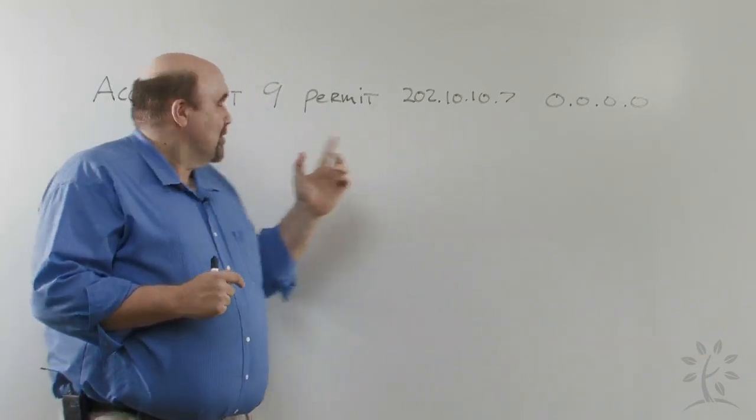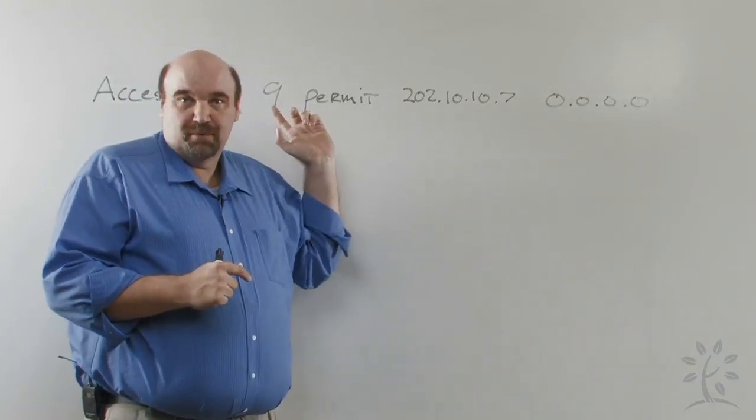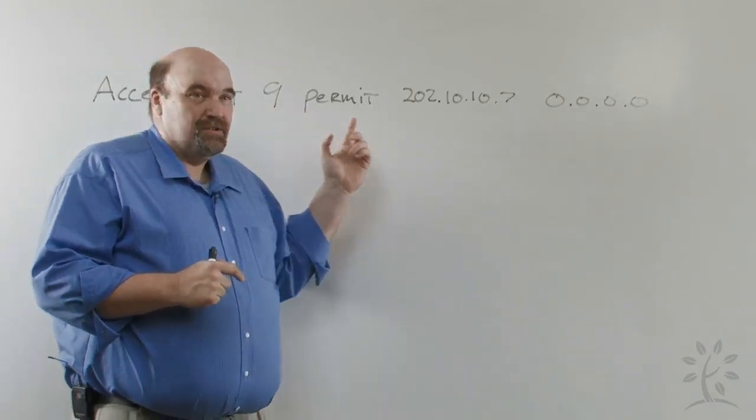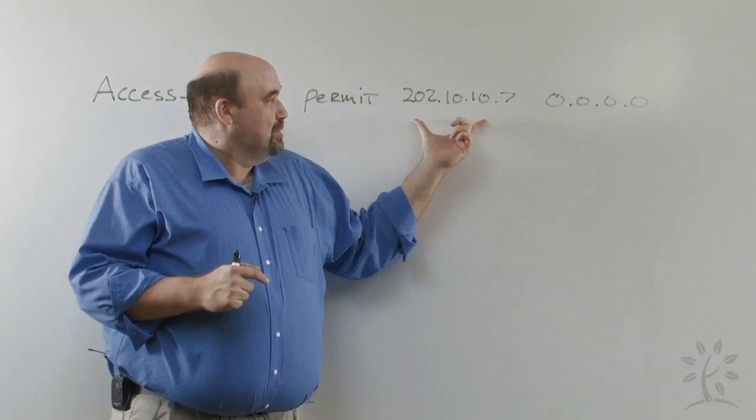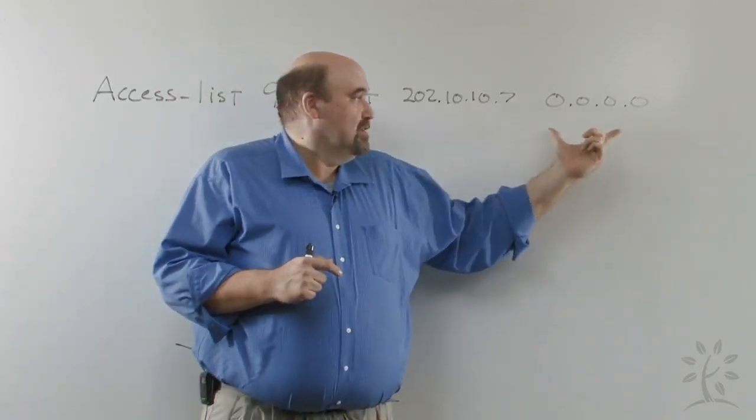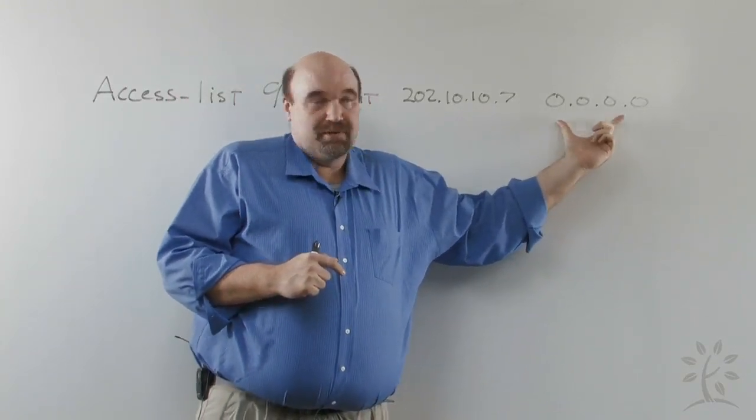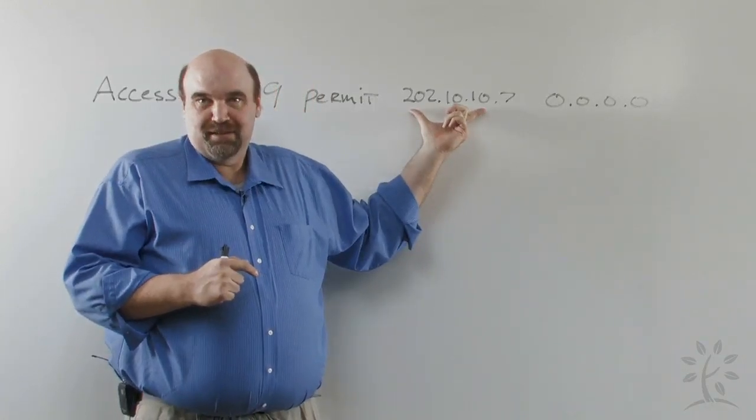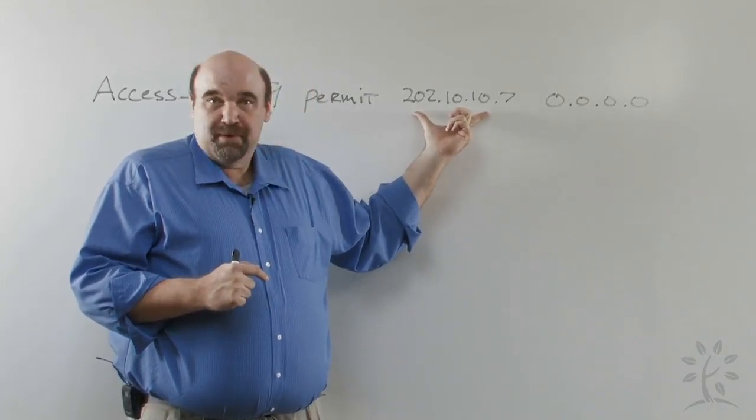So inside the argument access list here, this is a simple standard access list. Using the permit command, I'm going to match this condition. So when I turn on the zeros, it says this number has to match exactly. Every bit has to match.